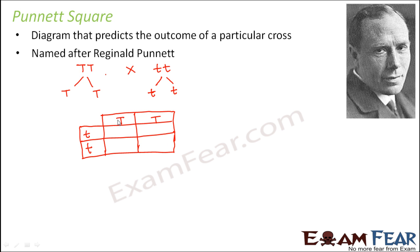So what do you do? So T and T, this will combine to form a capital T small t. Similarly, this will combine to form a capital T small t. This will also form the same thing, right? So these boxes actually tell you all the possible offspring that can be produced as a result of this cross, right?